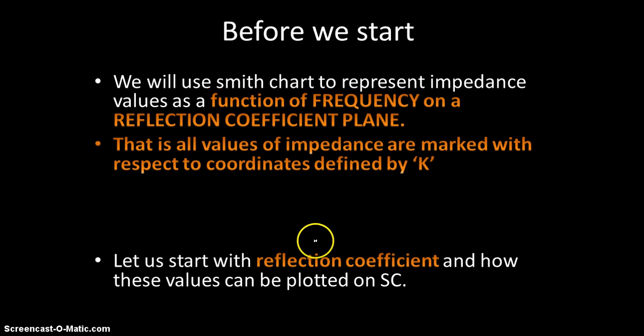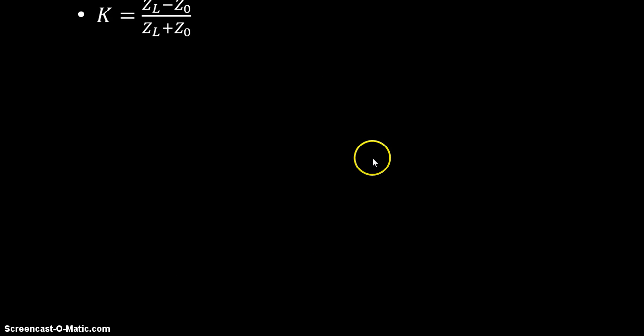We will start with reflection coefficient and how these values are plotted on your Smith Chart. How do you define reflection coefficient? K is equal to ZL minus Z0 divided by ZL plus Z0, where Z0 is your characteristic impedance and ZL is your load impedance.